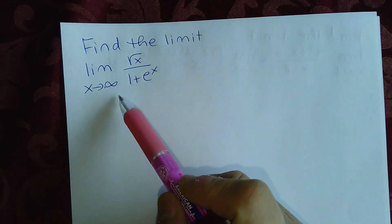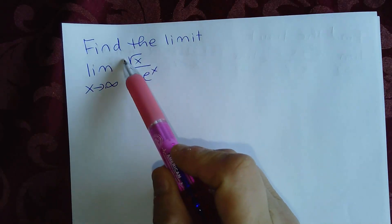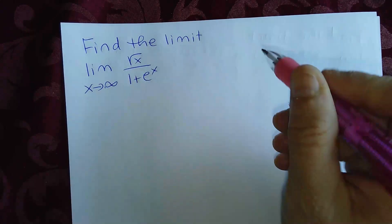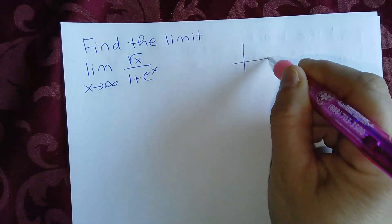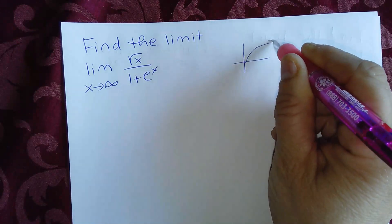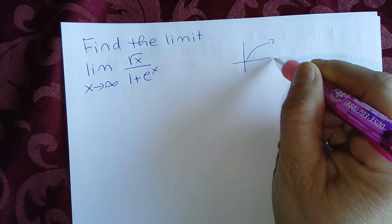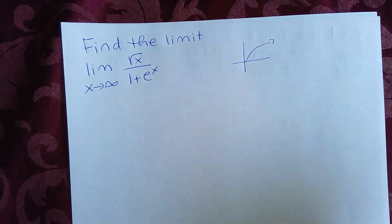As x approaches infinity, the numerator square root of x also approaches infinity. If you recall, the graph of square root of x looks like this — so as x increases, square root of x also increases.